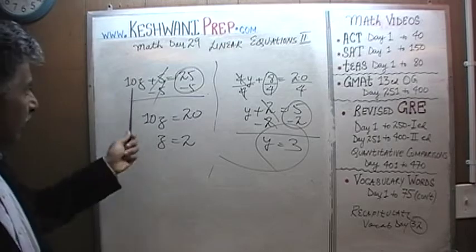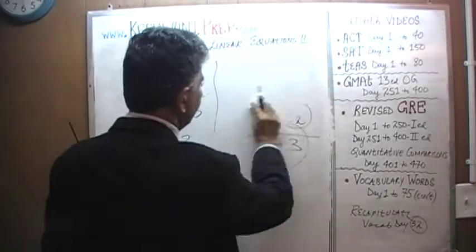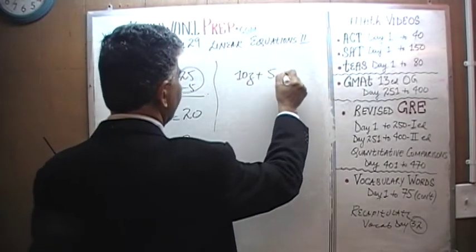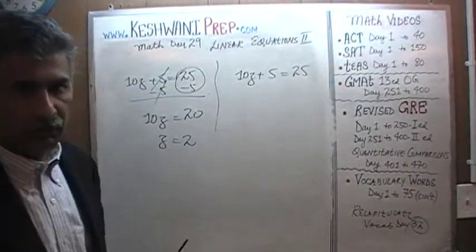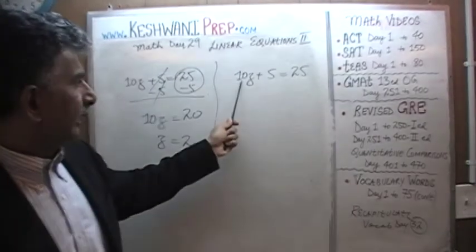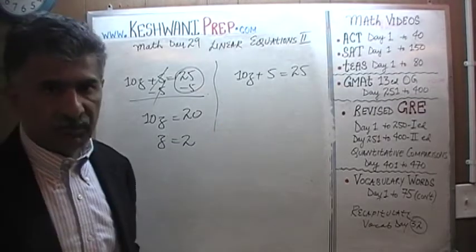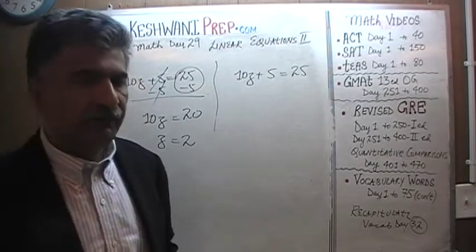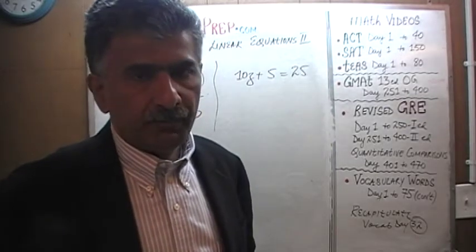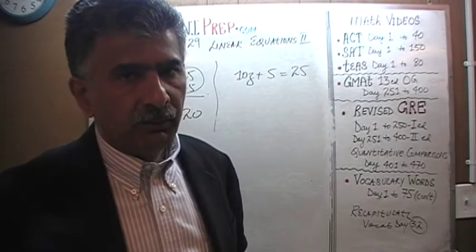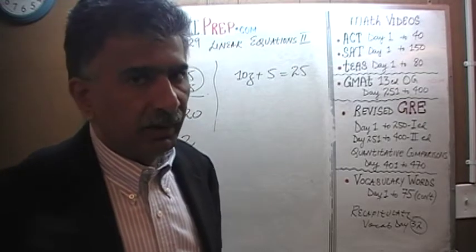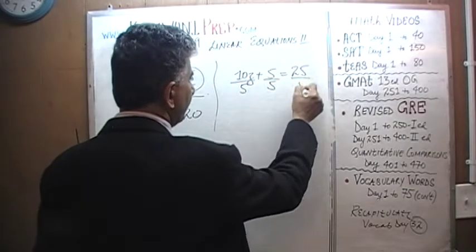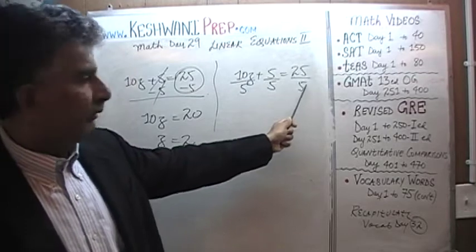What do you notice about this equation? Let's rewrite it here. 10z plus 5 equals 25. What we should have noticed — which we did not — is that 10 is a multiple of 5, 5 is a multiple of 5, and 25 is a multiple of 5. All of these numbers have a common factor of 5. We should have divided the entire equation by 5 right from the very beginning. It would have made our life a little bit easier. Let's divide all the terms on this side by 5 and all the terms on the other side by 5.